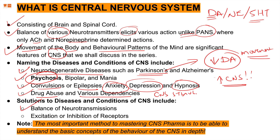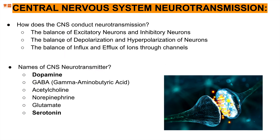Our goal is achieved by two things: balancing neurotransmissions and exciting or inhibiting receptors at target organs. For example, in Parkinson's the cause is decreasing dopamine, so we increase dopamine as treatment using levodopa. The balance of excitatory and inhibitory neurons is very important, as is the balance between depolarization and hyperpolarization.